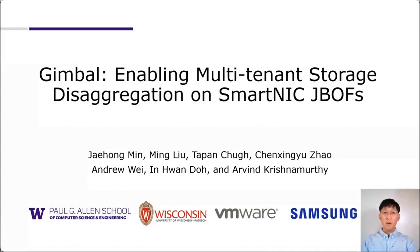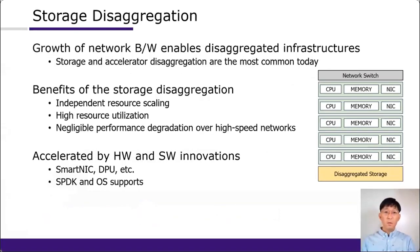I'm Jae Hong Min and I will present Gimbal: enabling multi-tenant storage disaggregation on SmartNIC JBOFs. This is a joint work with University of Washington, University of Wisconsin-Madison, VMware, and Samsung. The growth of network bandwidth enables disaggregated infrastructure — storage and accelerators are the most common in data centers. The main benefit of storage disaggregation is high resource utilization from independent resource scaling, with negligible performance degradation thanks to high-speed networks. SmartNIC is very common in today's data centers; while primarily used for network acceleration, it can also implement cost-effective and power-efficient JBOFs. We use Broadcom Stingray, which has a power-efficient SoC with 8 ARM cores and PCIe root complex to connect to NVMe SSDs, running Linux and supporting SPDK.